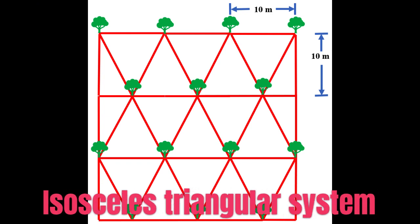In the isosceles triangular system, the area is divided into isosceles triangular grids and crops are planted at all the corners of the isosceles triangles. It is like the square system except the crops in the even-numbered rows are midway between plants in the odd-numbered rows. The plant population in this system is 11% less than the square system.